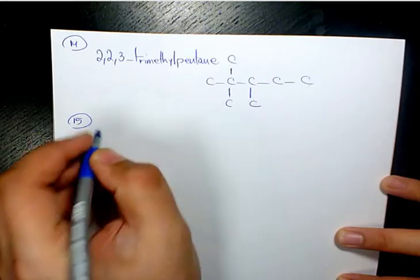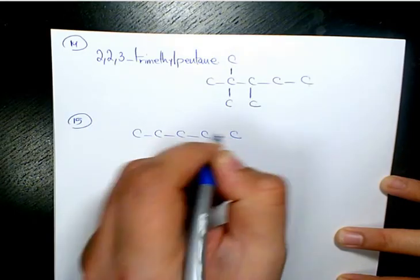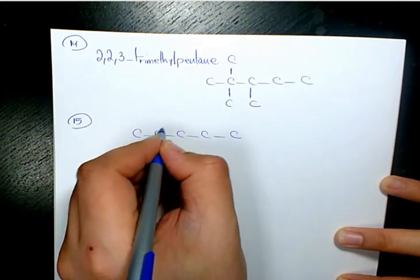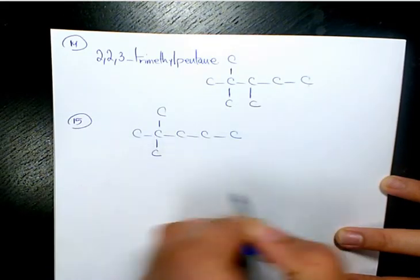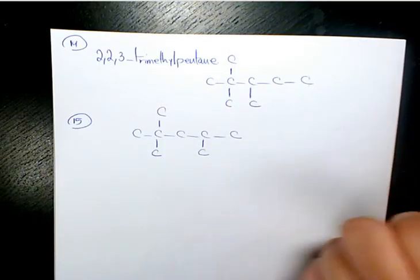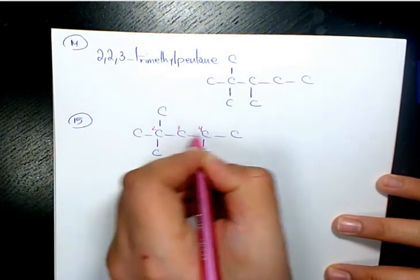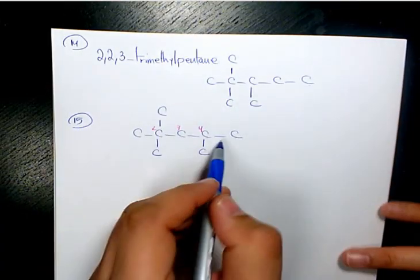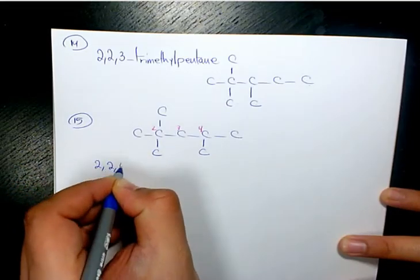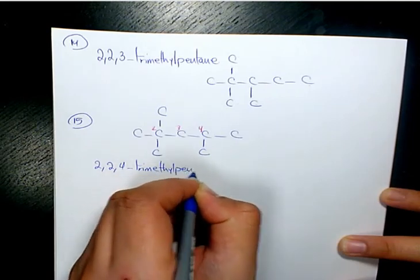Isomer number fifteen: 1, 2, 3, 4, 5 — we have two methyl groups on the second carbon and one methyl group on the fourth carbon. So it's going to be 2,2,4-trimethylpentane.